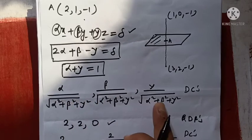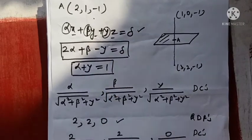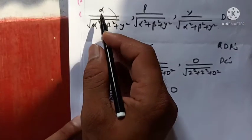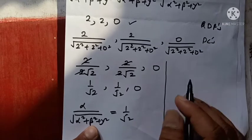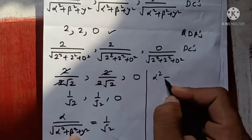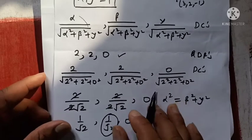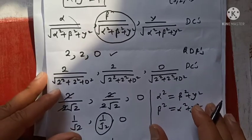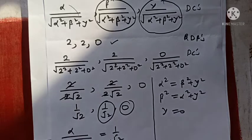We got direction cosines from the normal: (1/√2, 1/√2, 0). We also have direction cosines from the plane equation. Since both represent the same plane, they must be equal. Equating: alpha/sqrt(alpha²+beta²+gamma²) = 1/√2 gives us alpha² = beta² + gamma². Similarly, beta/sqrt(alpha²+beta²+gamma²) = 1/√2 gives beta² = alpha² + gamma². And equating the third component: gamma = 0.